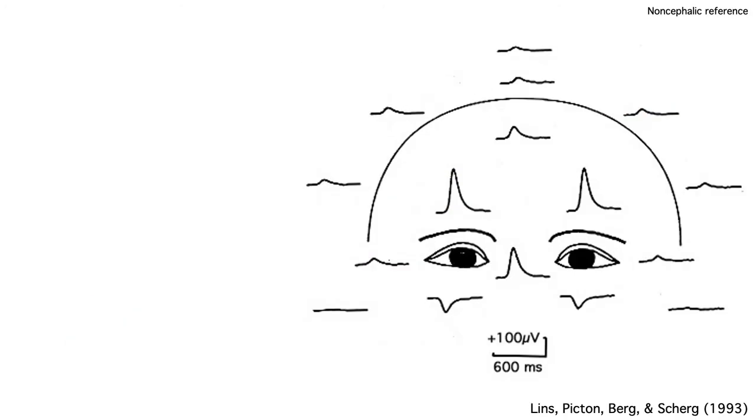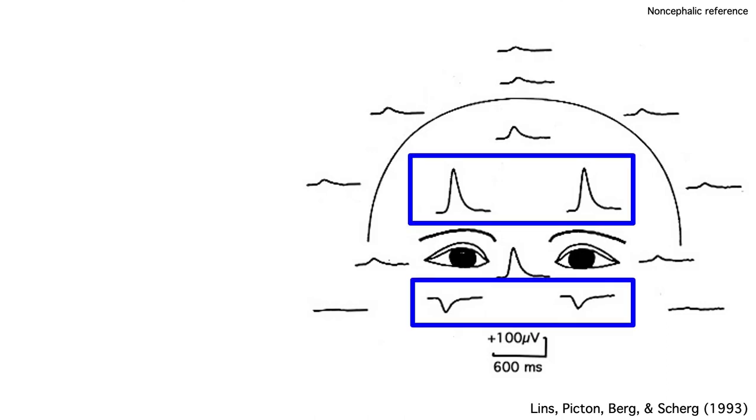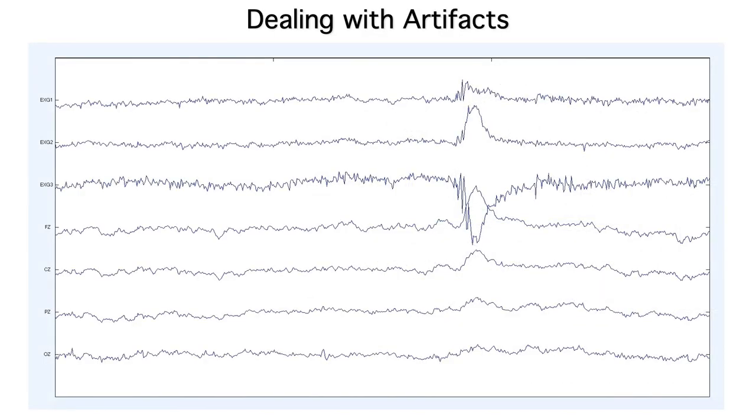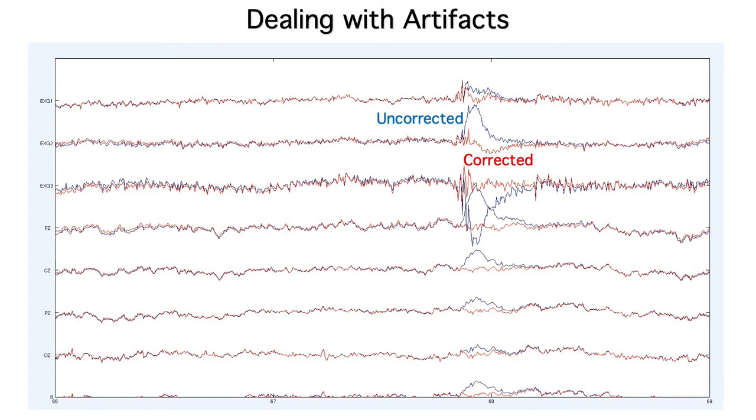And if the subject blinks, the movement of the eyelids over this dipole causes a huge voltage deflection on the scalp, negative under the eyes and positive above the eyes. Blinks are huge and easy to detect, and you can also correct for them using ICA. So most studies don't have differences in blink-related activity between conditions or between groups.